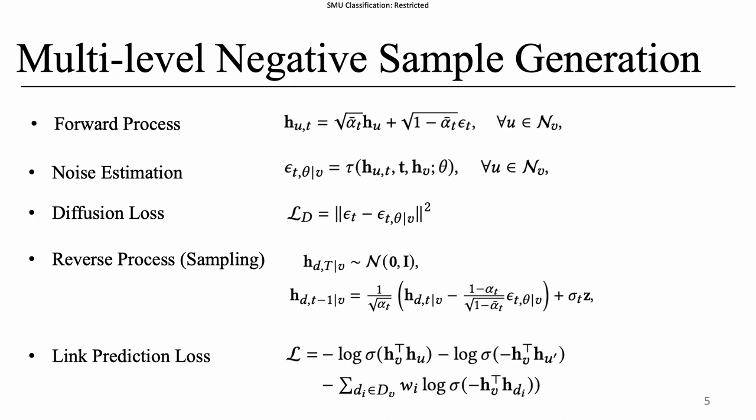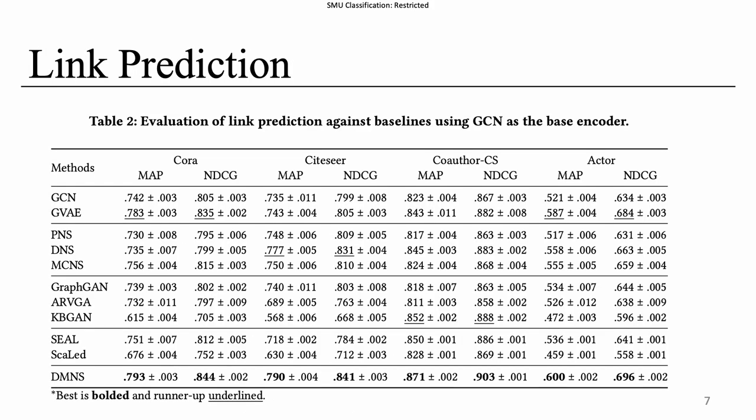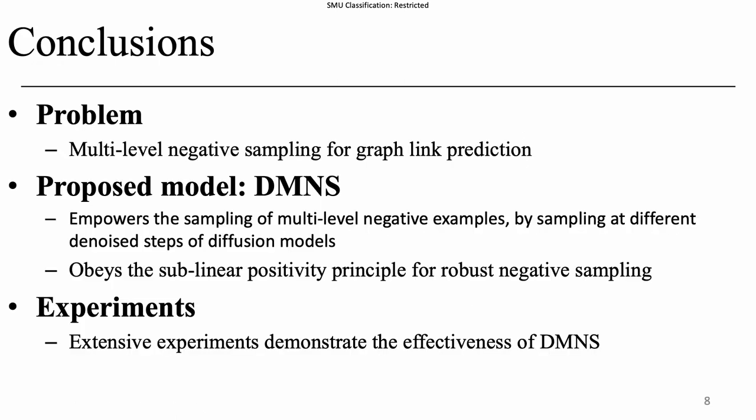The choice of time steps empowers us to control the hardness of negative samples. In the noise process, the output from the final step is the hardest to distinguish from positive nodes, while counterparts from earlier steps can be treated as progressively easier negative nodes. We can automatically incorporate such multi-level negative samples into training the link prediction task. We show that DMNS follows the sublinear positivity principle for robust negative sampling, hinging on the Markov chain property of diffusion models. The experimental results on four benchmark datasets demonstrate our model's effectiveness. For more details, check out our paper at TheWebConference 2024. Thanks.